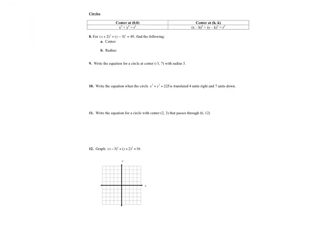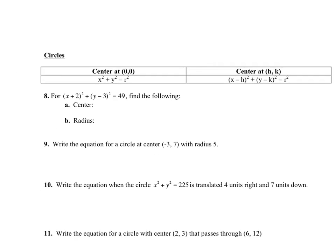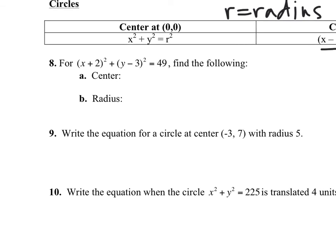Now circles — you'll feel nice and comfortable. Look at how little you need to know. R is the radius. If the center is at the origin: x squared plus y squared equals r squared. If the center has moved, the equation uses the opposite signs inside: (x minus h) squared plus (y minus k) squared equals r squared.